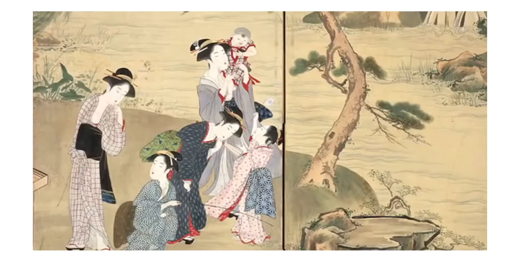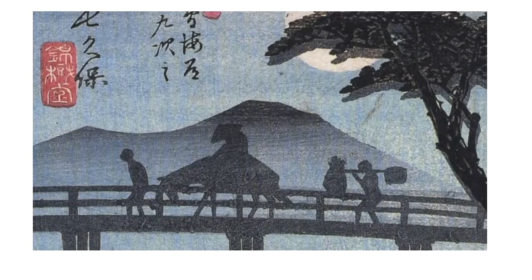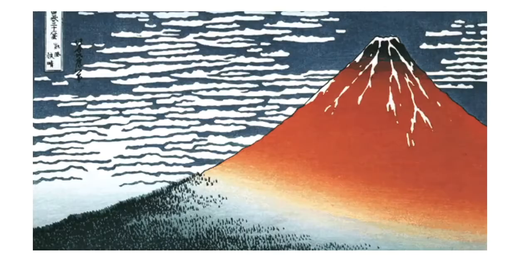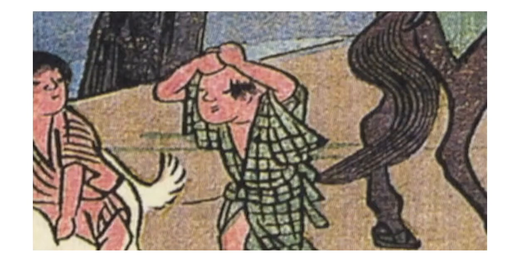Eastern art continued to develop in its own distinct way, often showing scenes from nature or the everyday world, like mountains, people kissing, or men in dressing gowns getting angry at other men in dressing gowns for riding albino dogs.